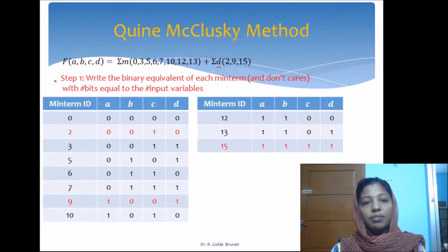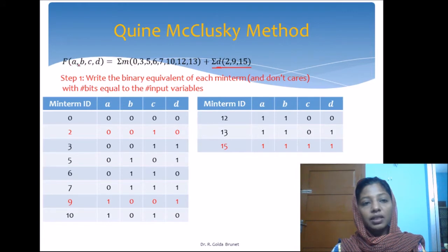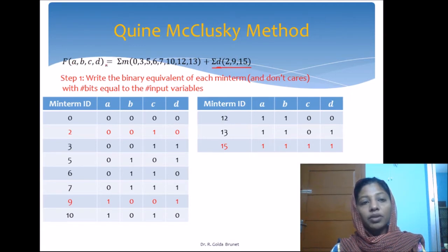The first step with Quine-McCluskey is that we write the binary equivalent of each of the minterms and don't care terms. Don't care is optional. If it is given, we also include the don't care, with number of bits equal to the number of input variables. For example, 0 is represented as 0, 0, 0, 0 — one bit for each input variable.